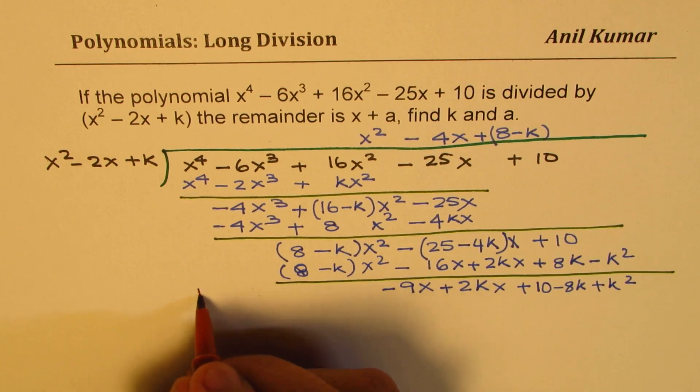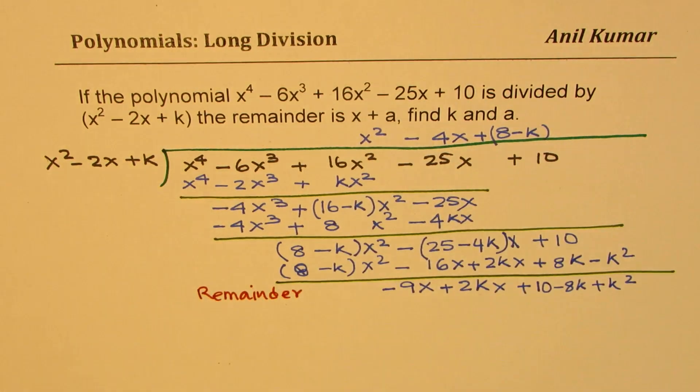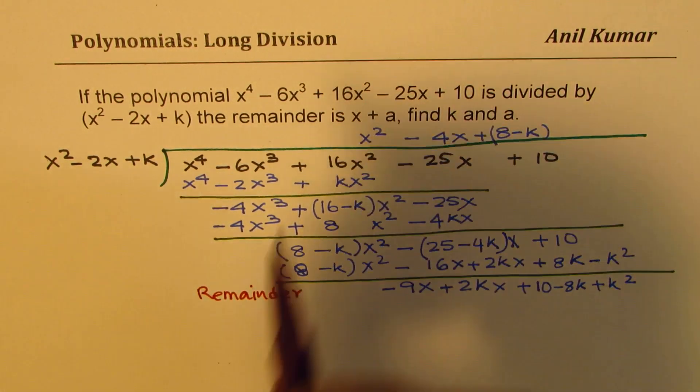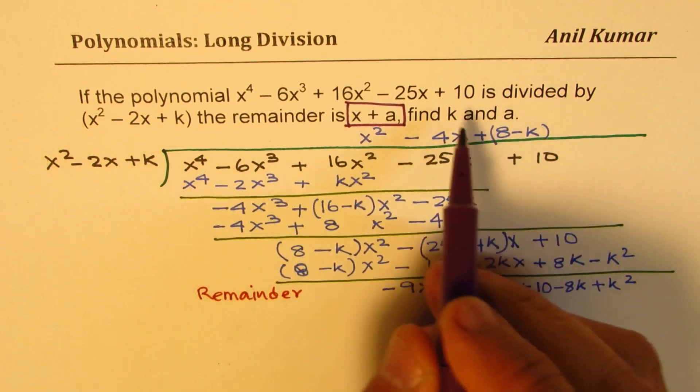So that becomes your remainder. So this is your remainder. Now we are saying, if the remainder is, let me highlight this, if the remainder is x + a, find k.